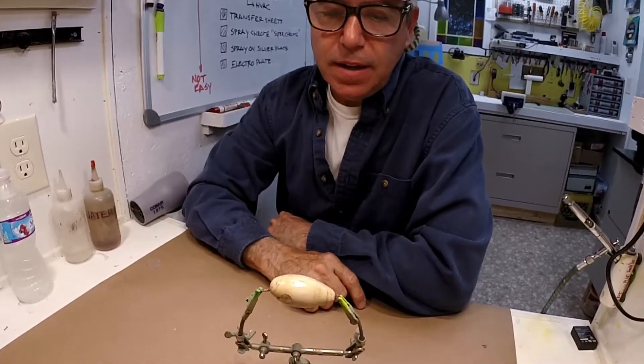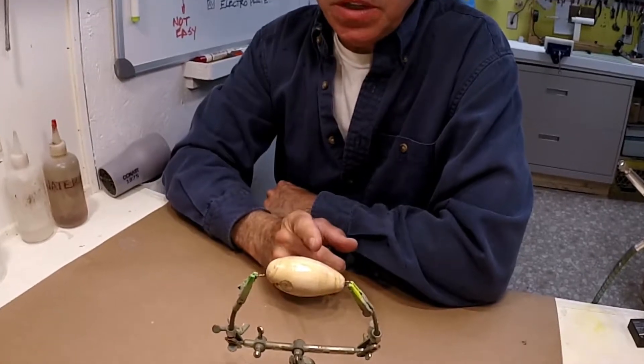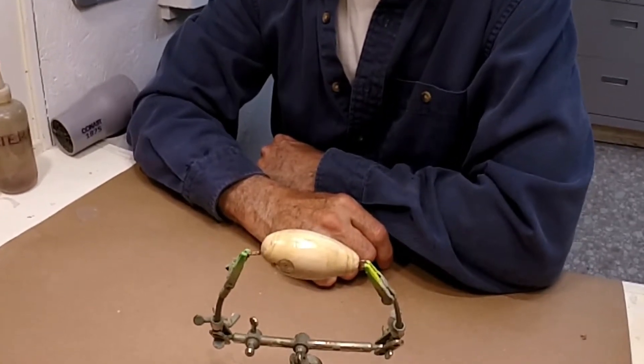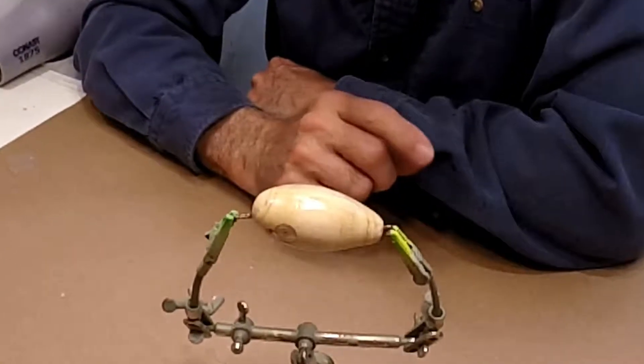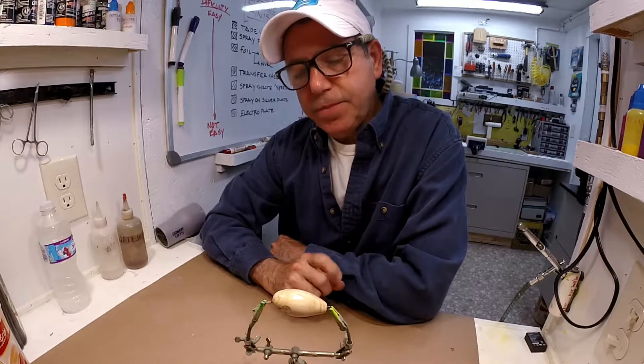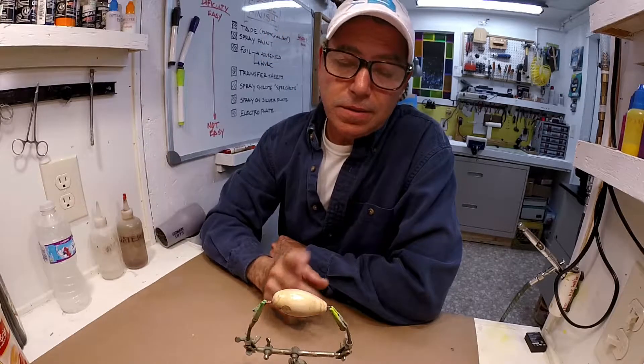So what I got in front of me is that little square bill crankbait that I shaped on the lathe and showed on a video a couple of videos back.